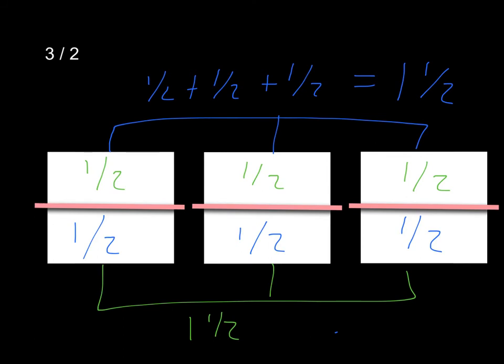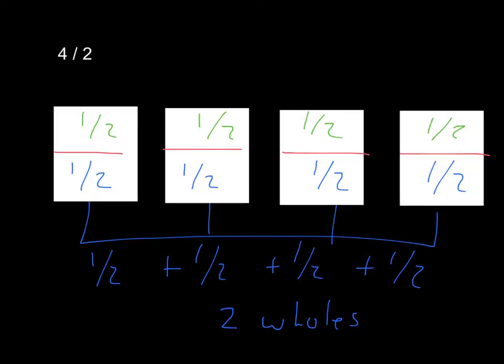Try these next two problems on your own. The first one is four halves — don't just say four divided by two; draw a picture that shows what you mean. When I solved it, I drew four wholes and split them each into two pieces. If I count up all the halves, I have one half plus one half plus one half plus one half, which is two wholes per person. So there are two wholes for blue and two wholes for green, giving a total of four.